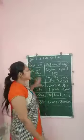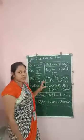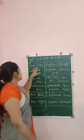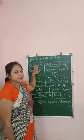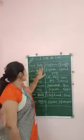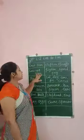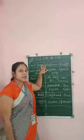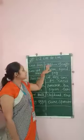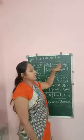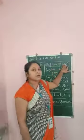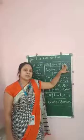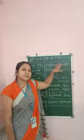We divide animals and birds category wise. Like ears seen, ears not seen. Whose ears we can see — elephant, giraffe, all kinds of animals. Ears we can see.